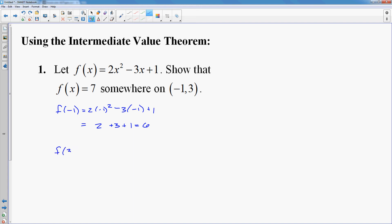Now I'm going to find out what f of 3 is. So that would be 2 times 3 squared minus 3 times 3 plus 1. Let's see, 3 squared is 9 times 2 is 18 minus 9 plus 1, and that gives you 10. So I'm starting at an ordered pair negative 1, 6, and I'm ending at the ordered pair 3, 10. Since my function is continuous, then I know that at some point between these two, I've got to hit a y-coordinate of 7.